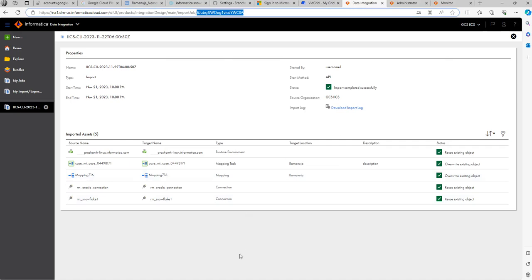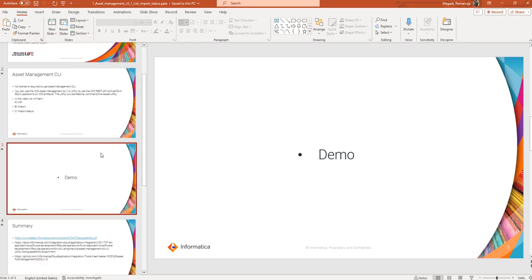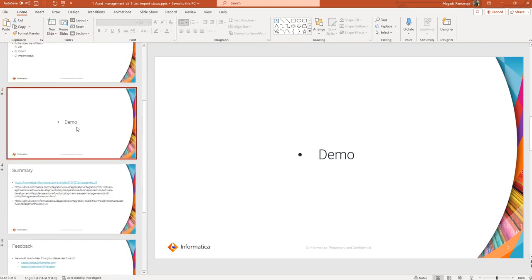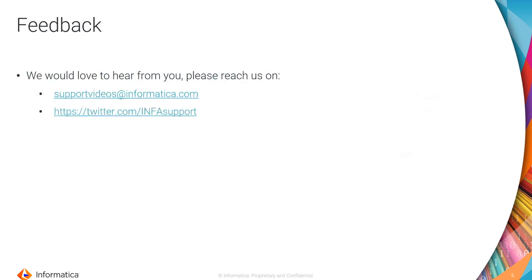This is a brief demo of Asset Management CLI covering list, import, and import status. We will cover the remaining operations — export, extract a zip file, and publishing a task flow — in upcoming videos. I'll share KB articles in the description with detailed parameter explanations, documentation links, and the GitHub repository link where the Asset Management CLI files exist. We'd love to hear from you at supportvideos@informatica.com or on Twitter at InfoSupport.